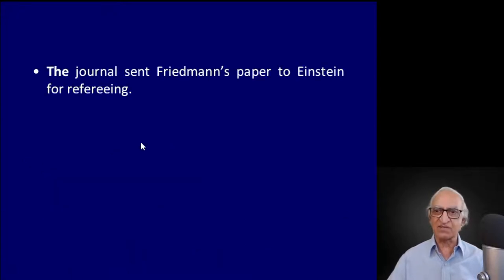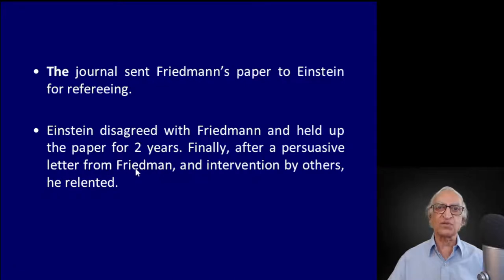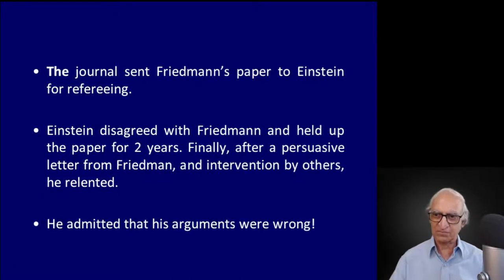As luck would have it, the journal to which Friedman submitted his paper sent it to Einstein for refereeing. Einstein strongly disagreed with Friedman's conclusions and held up the paper for two years. Finally, after a long and persuasive letter from Friedman and intervention by several others, Einstein relented and requested the journal to publish the paper. He admitted that his arguments for holding it up were actually wrong.